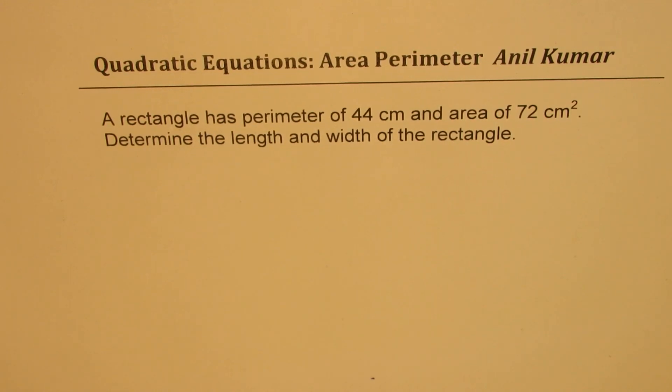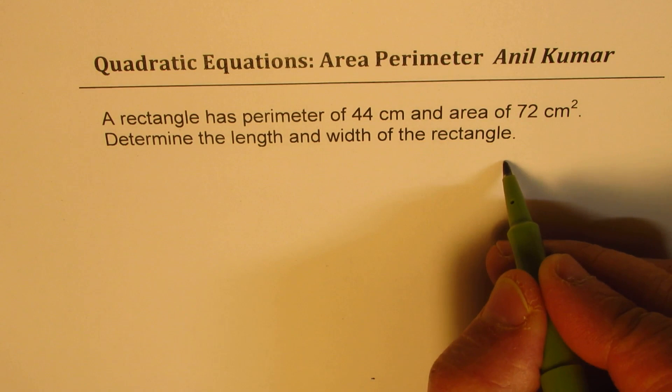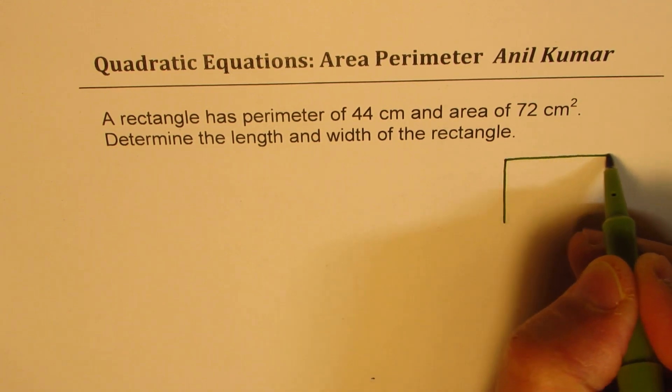I'm Anil Kumar sharing a question from one of our subscribers. The question here is: a rectangle has perimeter of 44 centimeters and area of 72 centimeters square. Determine the length and width of the rectangle. So we have a rectangle here.